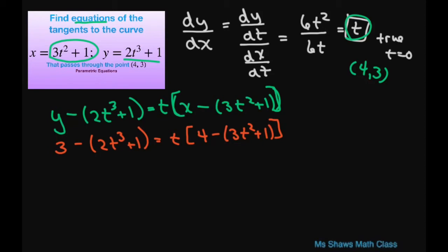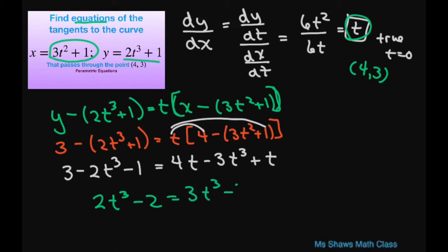Simplifying all this and distributing we're going to get 3 minus 2t cubed minus 1 equals 4t minus 3t cubed. Simplifying that further, we have t cubed minus 3t minus 2 equals 0.